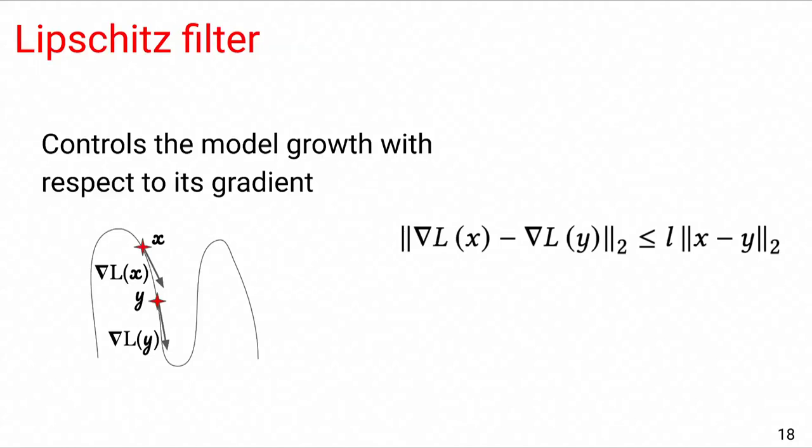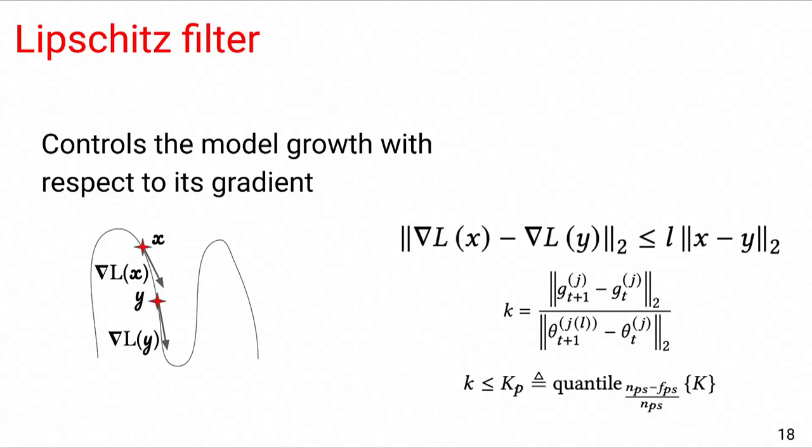The Lipschitz filter relies on a standard assumption on loss functions used typically in ML applications. This assumption relates the L2 distance between two models to the L2 distance between their gradients. Such a relation is governed by a constant which is called the Lipschitz constant or the Lipschitz coefficient, which is denoted by L in this equation. A worker uses this assumption to detect a Byzantine model. Basically, when a worker receives a model, it computes an empirical estimation of the Lipschitz coefficient, which is denoted by k here, and compares it with the coefficients of correct models from previous iterations. Intuitively, if this coefficient is close enough to previously computed coefficients of correct models, then this model is probably correct and it passes the filter.